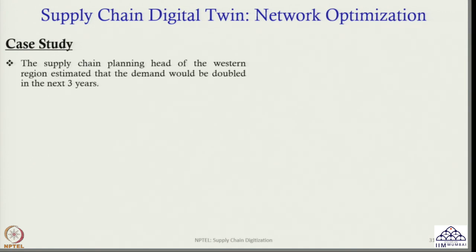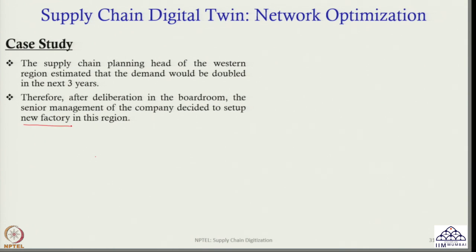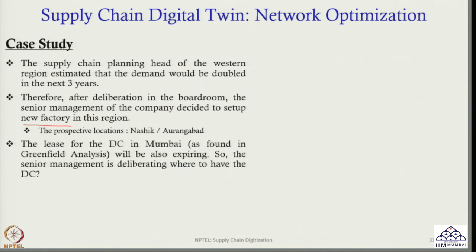The Supply Chain Planning head of the western region estimated that demand would be doubled in the next three years. So demand is going to increase. After deliberation in the boardroom, the senior management decided to set up a new factory in this region. The prospective locations are Nasik and Aurangabad. From the green field analysis, the optimal location of the DC was found to be Mumbai, but that lease will be expiring.